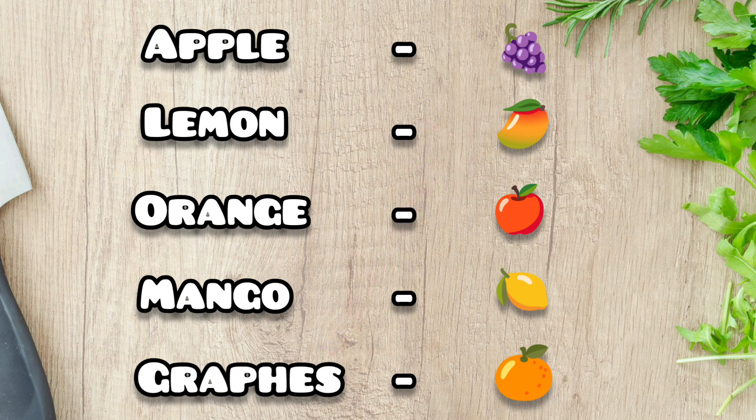To summarize: apple is the third picture, lemon is the fourth picture, orange is the fifth picture, mango is the second picture, and grapes is the first picture. This completes the match the following question on fruits.